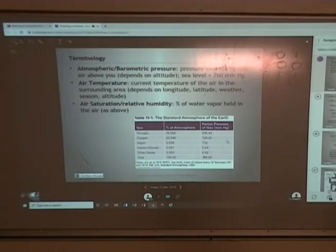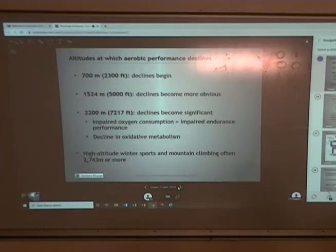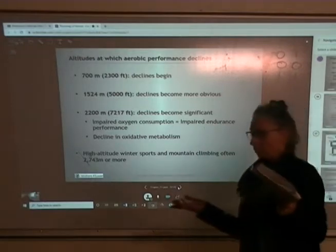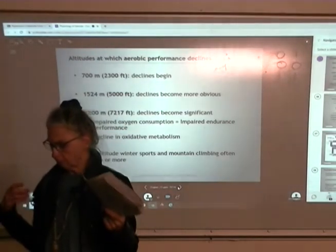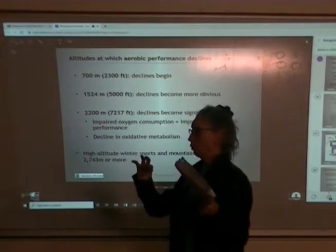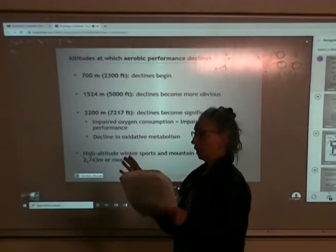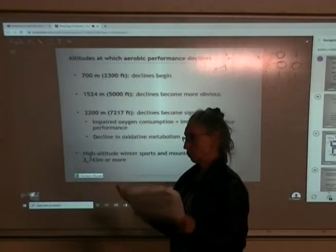Those partial pressures should bring back memories of the chapter on ventilation and respiration. At sea level, our oxygen saturation is at 100%. When we're looking at oxygen saturation in the blood, we're looking at hemoglobin — how much of the hemoglobin has oxygen attached to it. At sea level that should be 100% if you're healthy.